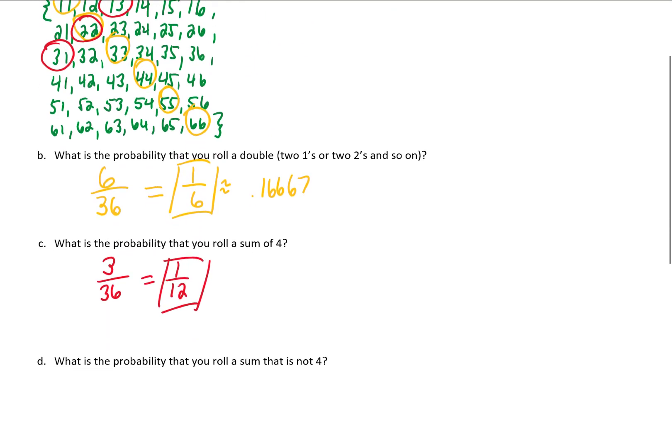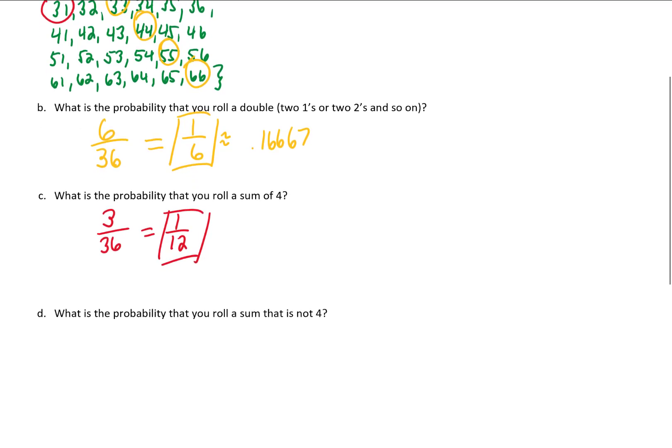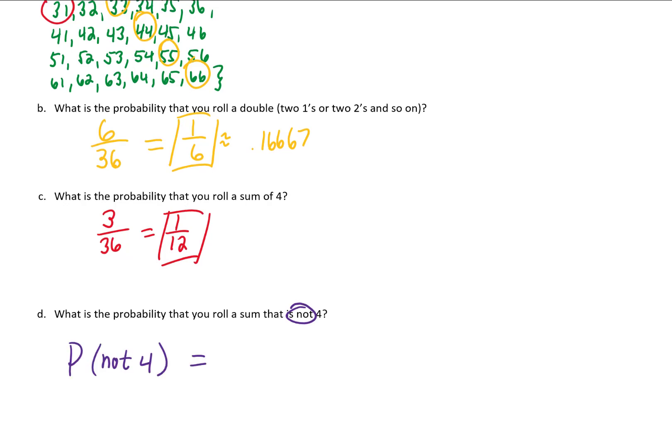All right, and the last question asks, what is the probability that you roll a sum that is not four? There are a couple ways to do this, but the key word here is not. If we want to use our probability formulas, this formula comes from the first video on probabilities, which I will hopefully be popping up a link to right now. But the probability of not something happening is 1 minus the probability of that thing happening.